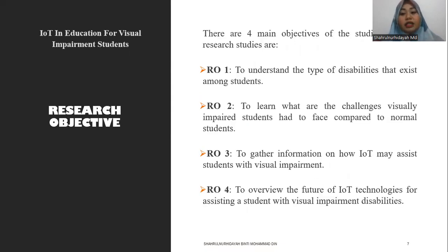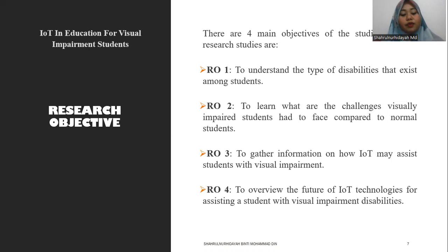Next are the research objectives. There are four research objectives in this study. The first is to understand the types of disabilities that exist amongst students. The second is to learn what challenges visually impaired students have to face compared to normal students. The third is to gather information on how IoT may assist students with visual impairment. The last is to overview the future of IoT technology for assisting students with visual impairment disability.